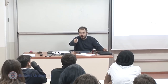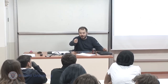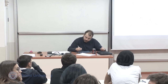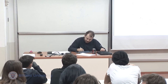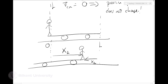The amount I walked with respect to the ground plus the amount the car slid with respect to the ground must add up to the total length of the car. So x1 plus x2 equals L. How much I have moved with respect to the ground plus how much the car has slid must be L.